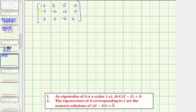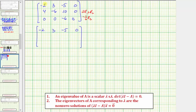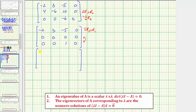Let's get a zero in the second row first position. Notice that two times negative two plus four is zero. We replace row two with two times row one plus row two. Let's also replace row three with negative one sixth times row three to get a leading entry of one. Row one stays the same. Row two becomes all zeros. Row three becomes zero, zero, one, zero.